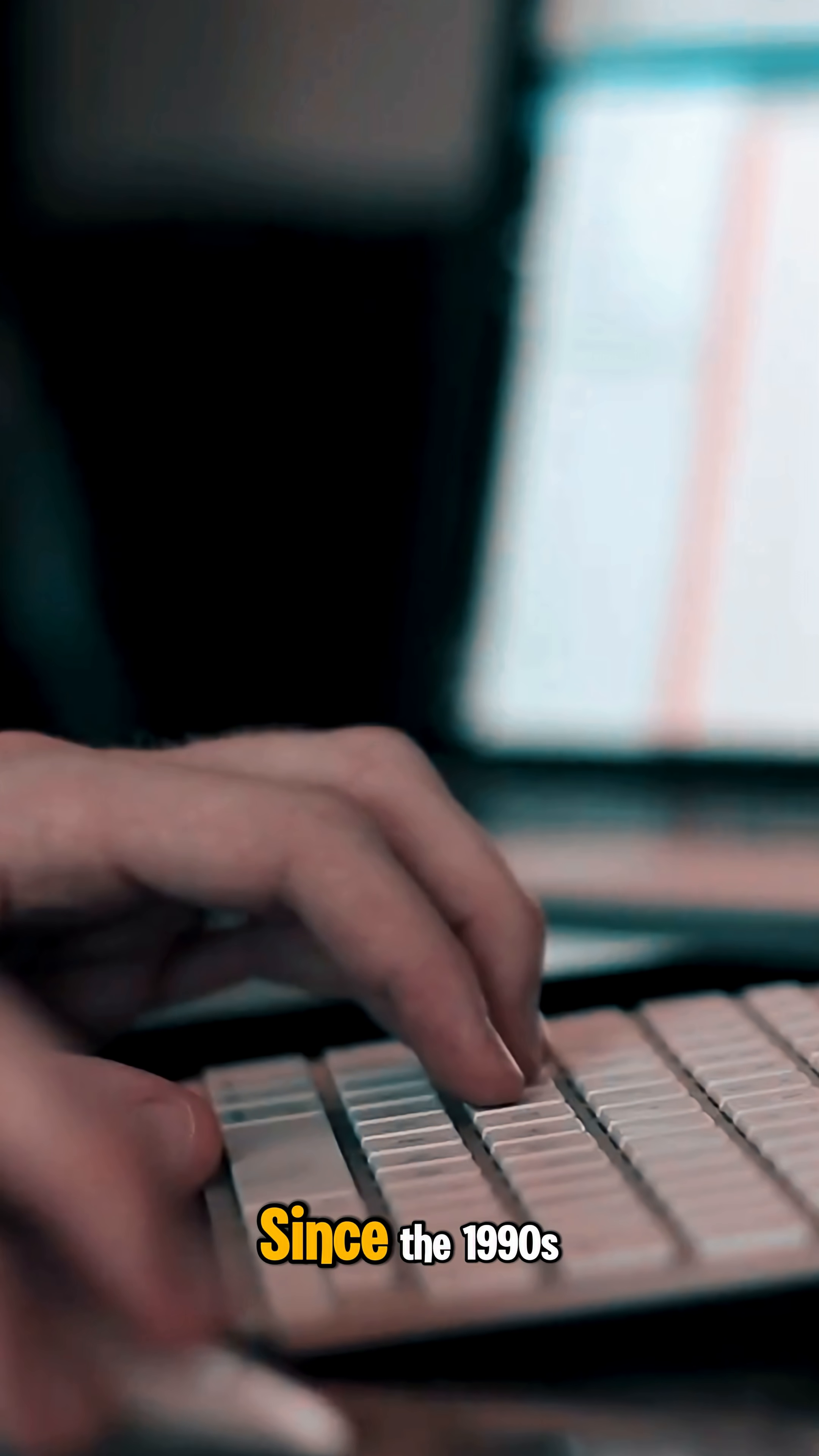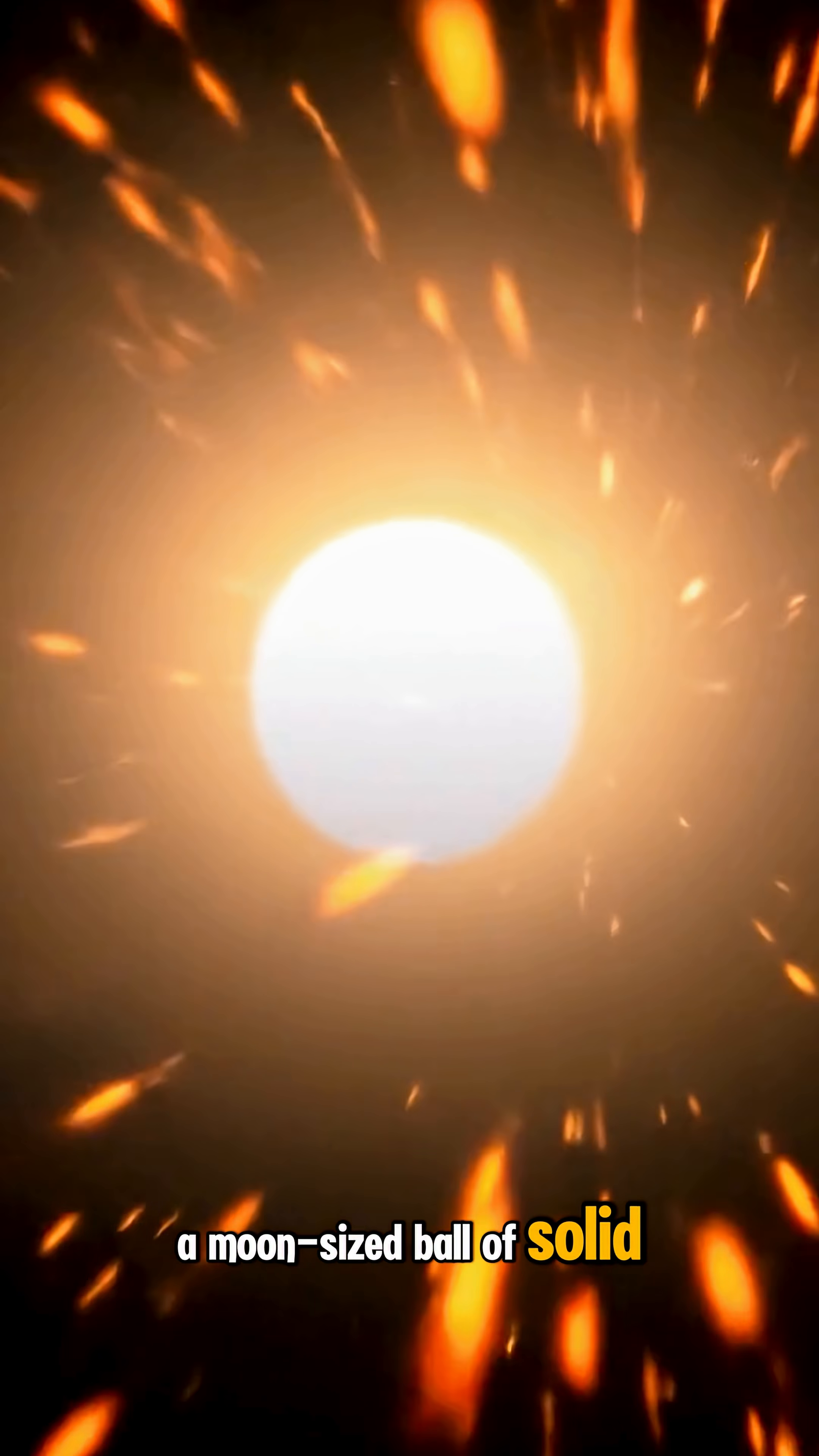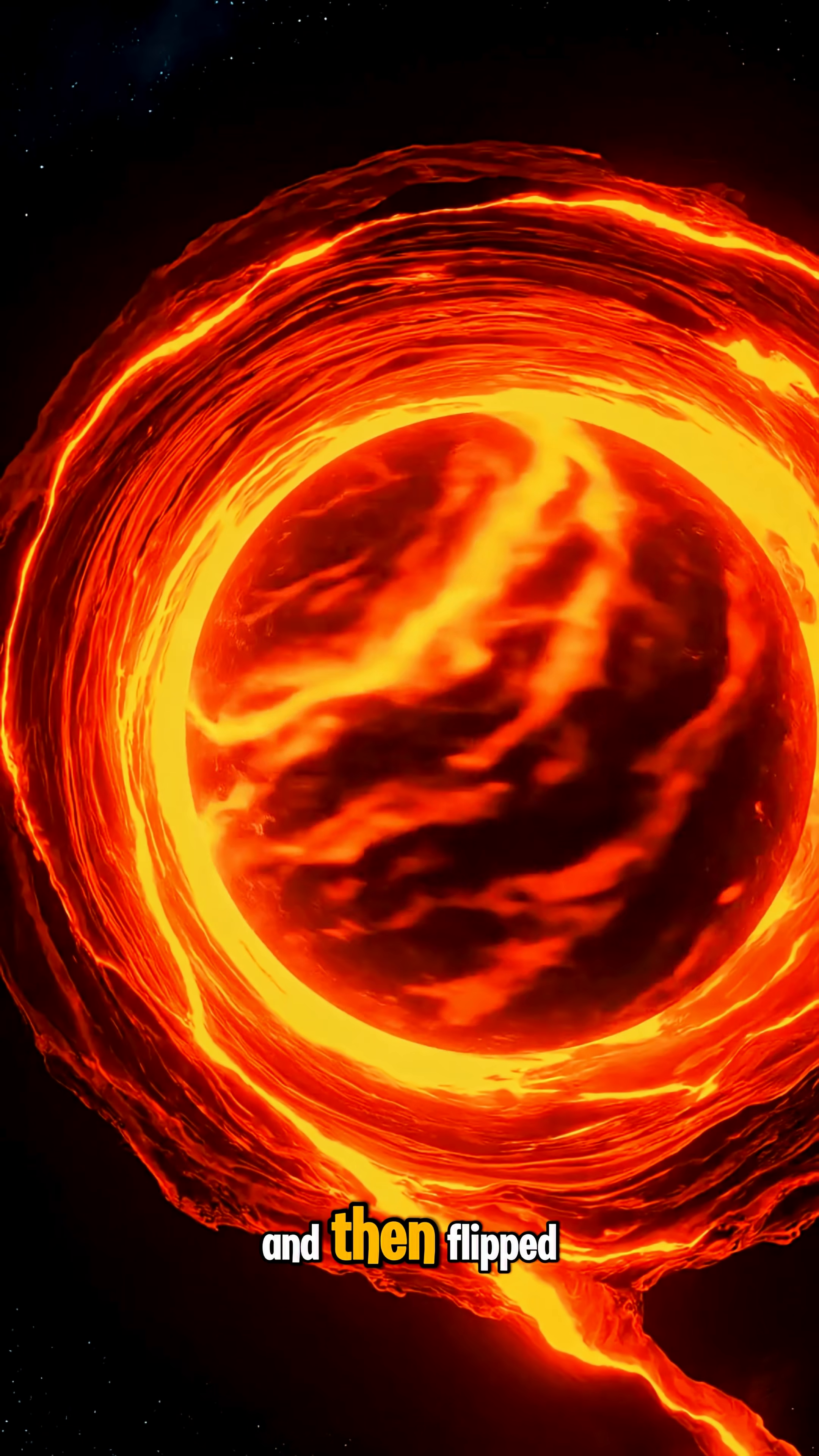Since the 1990s, scientists tracked Earth's inner core, a moon-sized ball of solid iron at 5,000 degrees, spinning slightly faster than the rest of the planet. The rotation hit its peak, and then flipped.